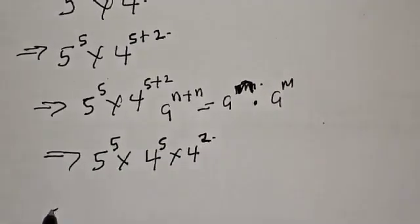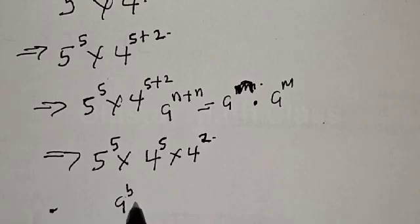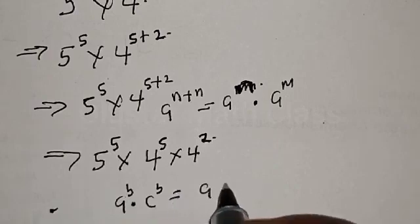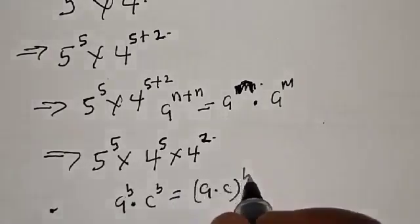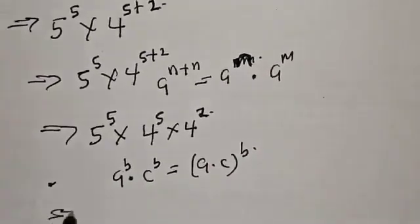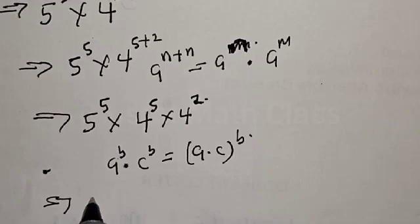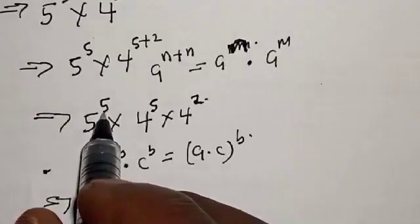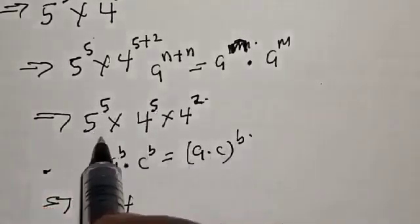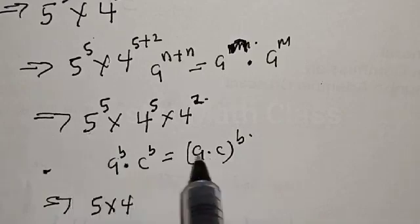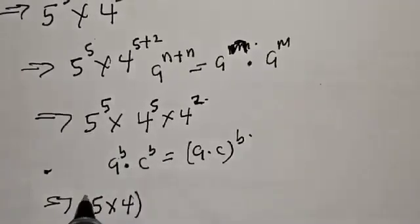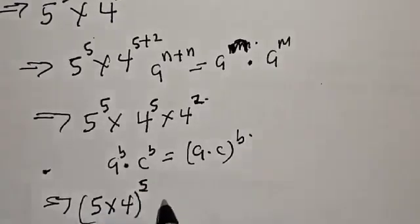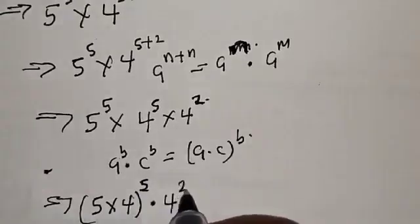Now, remembering the rule that if you have a raised to power b multiplied by c raised to power b, this equals a times c raised to power b. Here our a is 5 and our c is 4, so we have 5 times 4 raised to power 5, then multiplied by 4 squared.